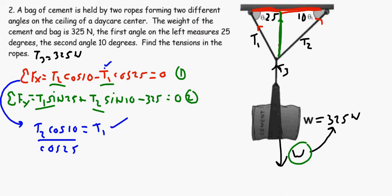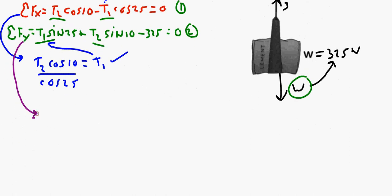Now what I'm going to do is plug that into here. So I'm going to drop the sum of the forces in the y down and I am going to replace that. So instead of writing T1, I'm now going to write T2 cosine 10 all over cosine 25.